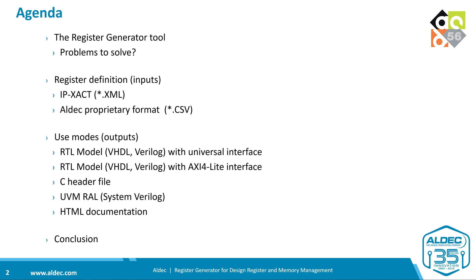The outputs are written in VHDL and Verilog with a universal interface or with AXI-4 Lite interface. The next kind of output is the C header file used by the programmer to access the register block from the software level. The next kind of output is the UVM RAL model written in a SystemVerilog package, and at the end, the HTML documentation.